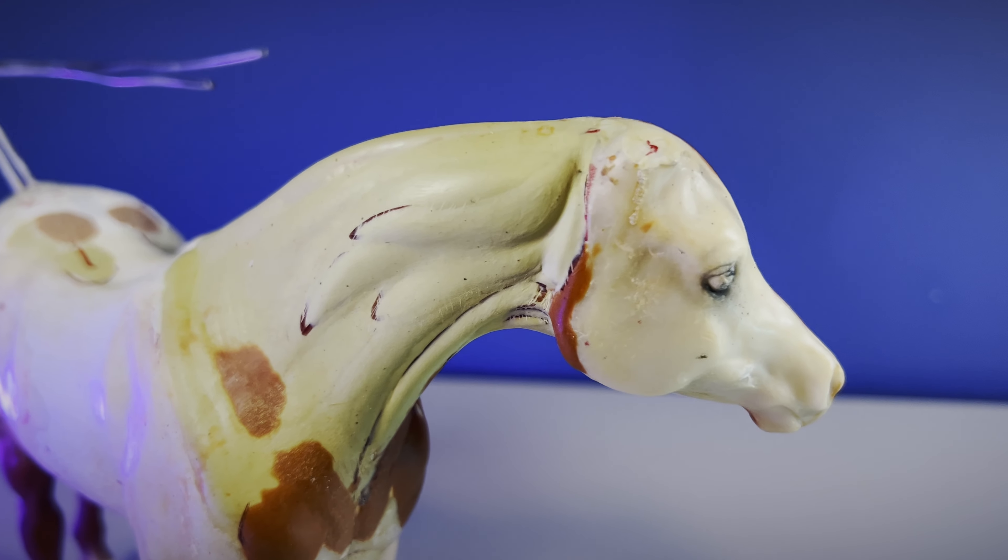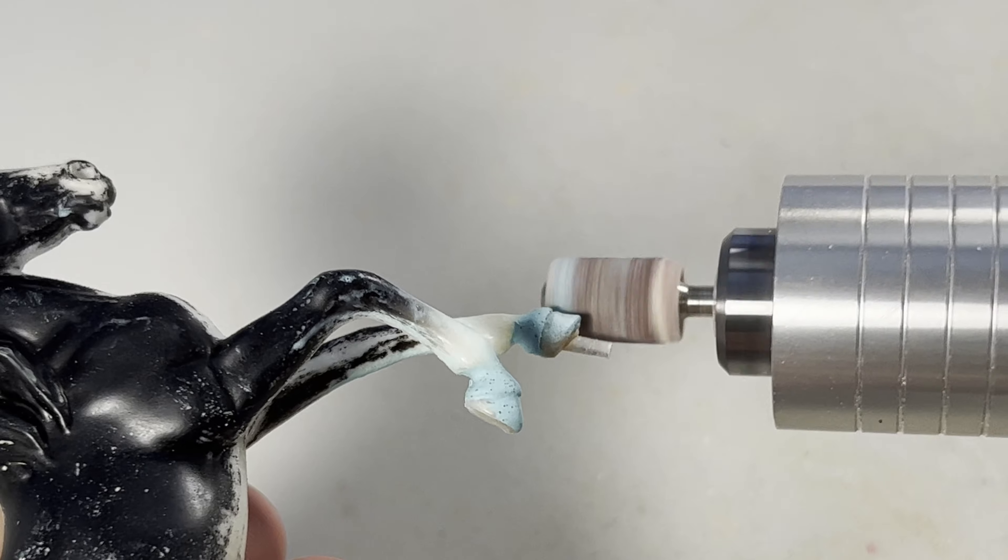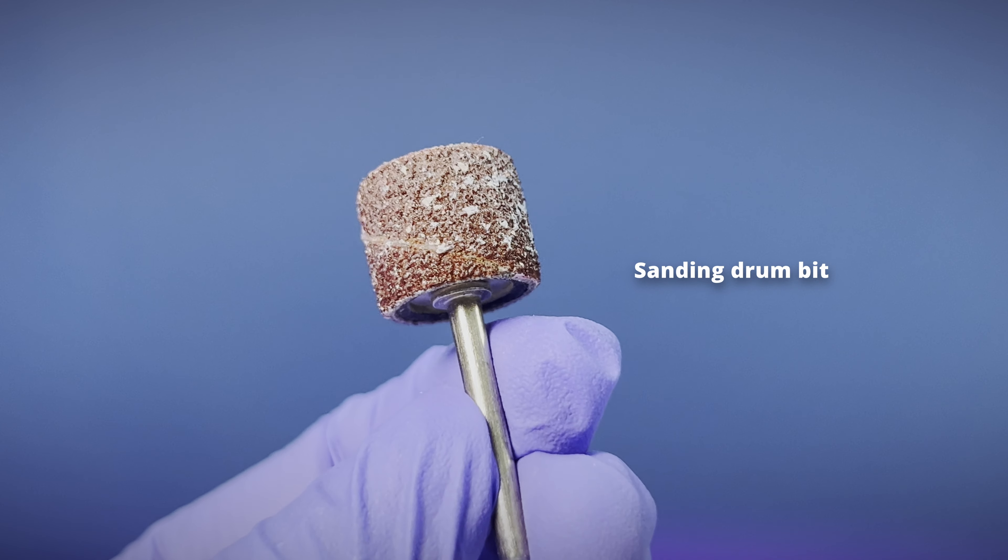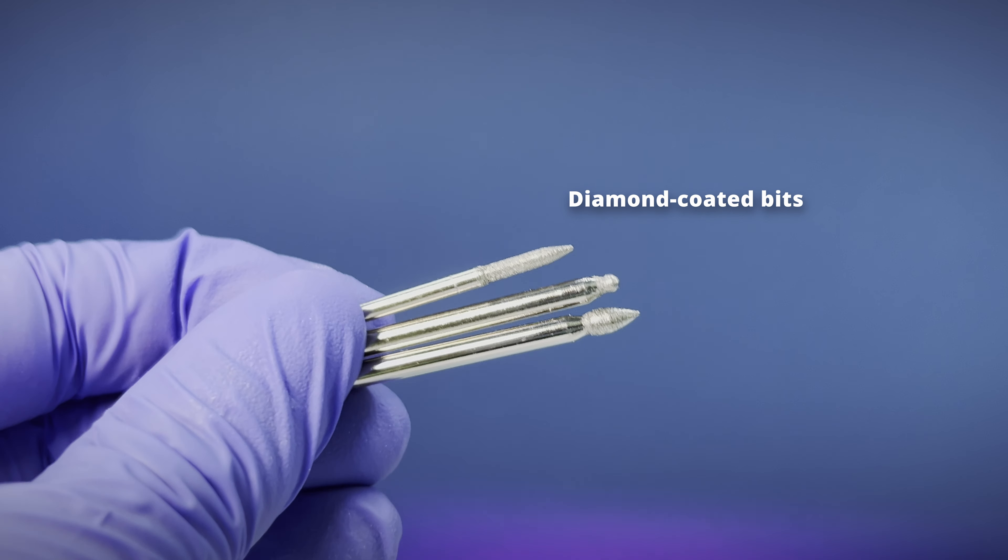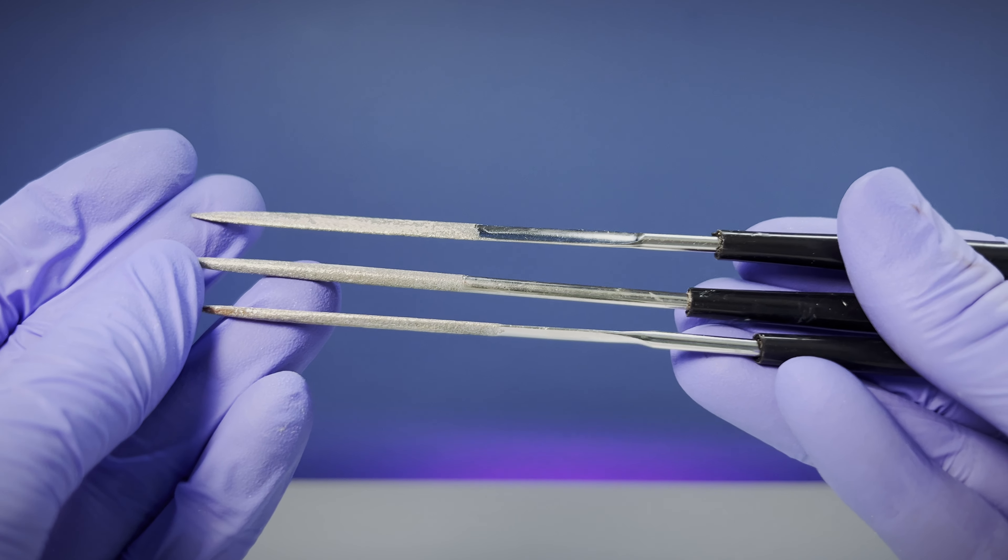A secret trick to subtractive sculpting: a variable speed rotary drill with small bits like these sanding drums and these diamond coated bits are my favorites for working with Milliput. Needle files work pretty well too, are budget friendly, and are some of my favorites.